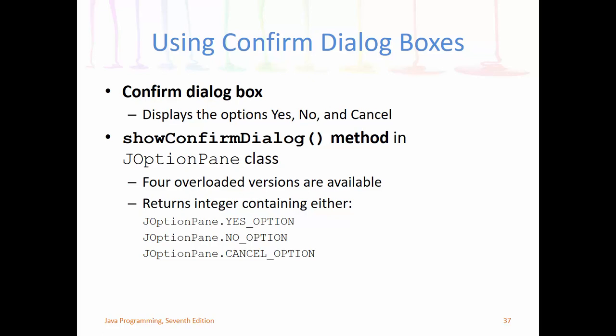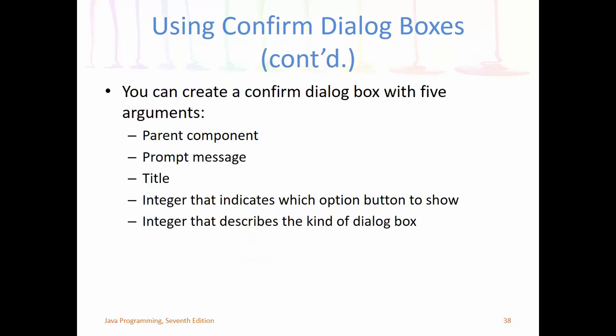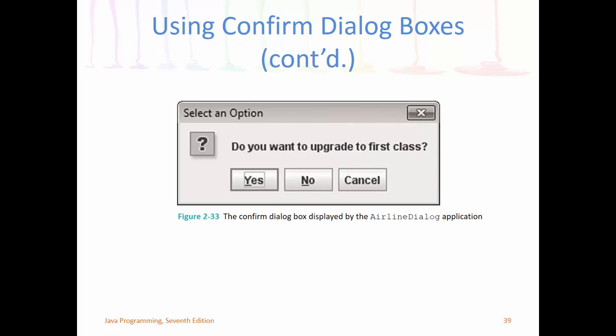JOptionPane also has confirm dialog boxes — similar to JavaScript's confirm boxes. They display yes, no, and cancel options. Not too concerned with those for our assignments, but that's what they look like.